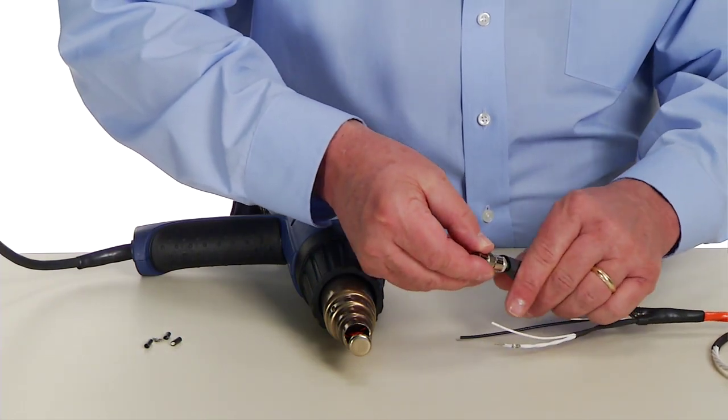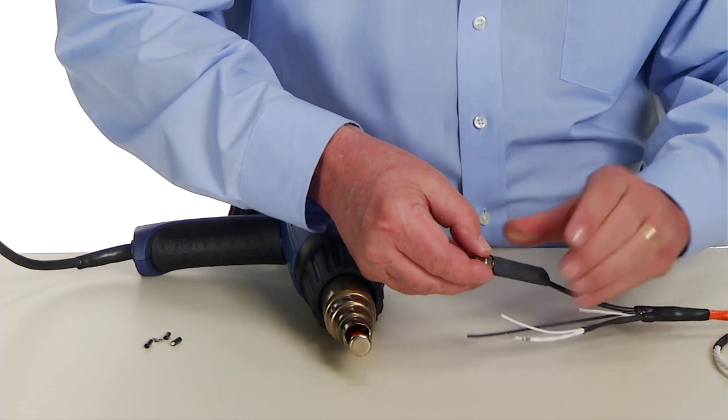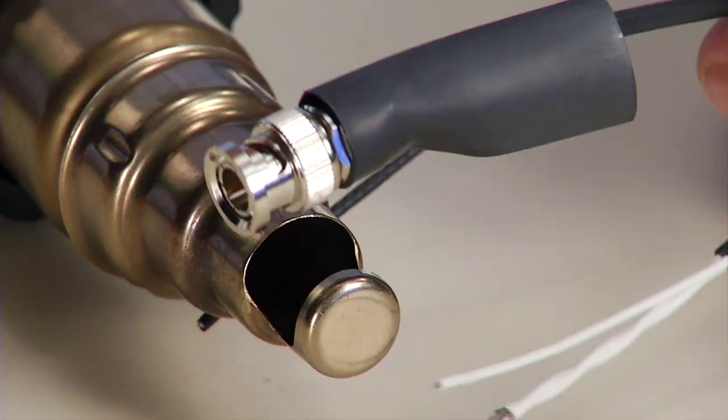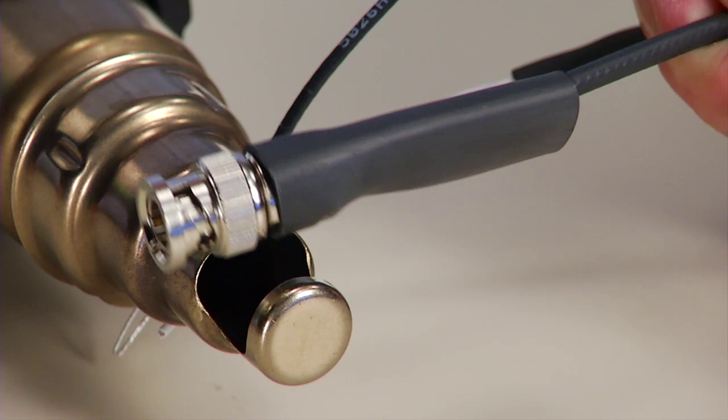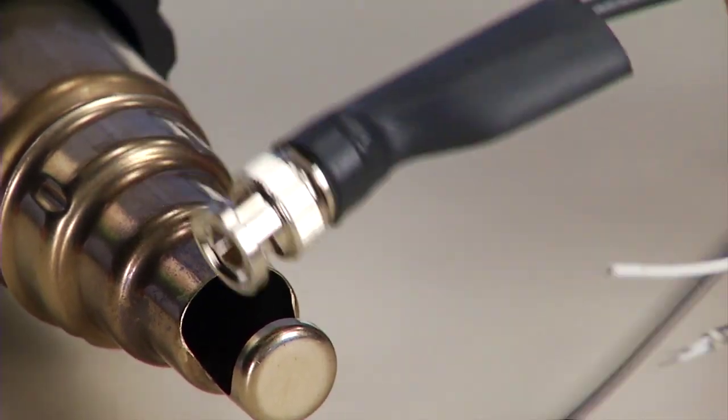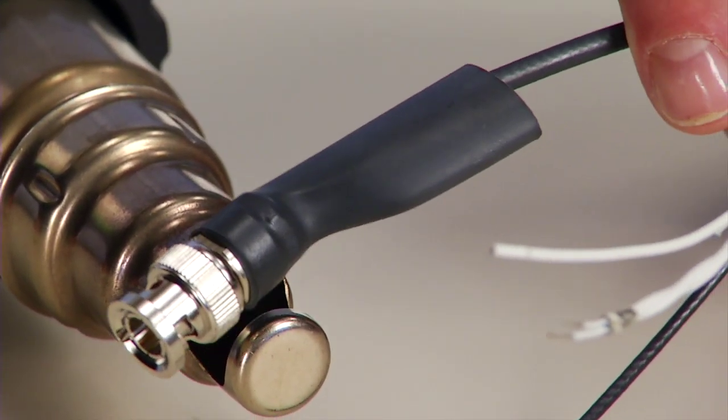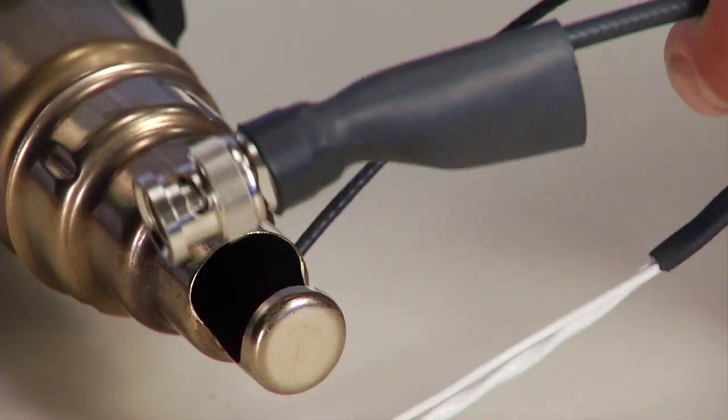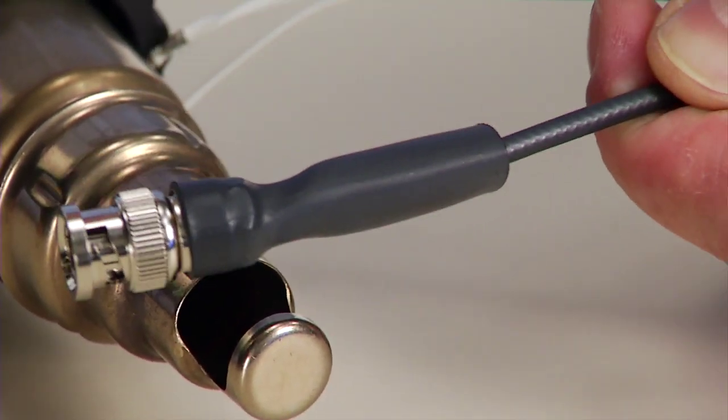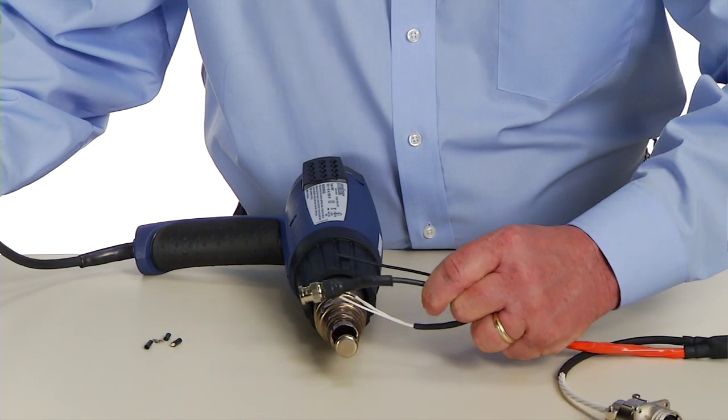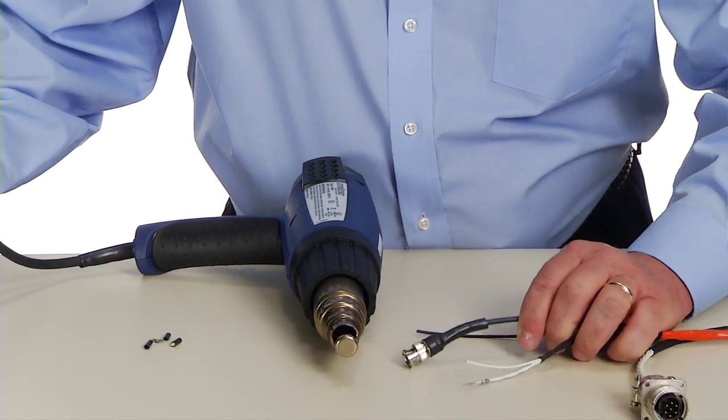Slide the black shrink tubing forward over the solder shield and nut. Heat until the tubing shrinks down on the cable insulation and the adhesive melts. Allow the assembly to cool down before handling.